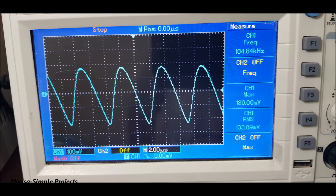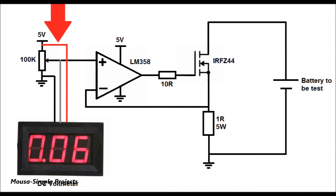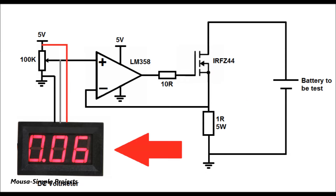As you can see on the scope, the MOSFET is switching at a frequency of 180 kilohertz. The reference voltage comes from a potentiometer as a voltage divider. Since the voltage at this point is equal to the current, I simply connect a DC voltmeter at this point to preset the current before connecting the battery under test.